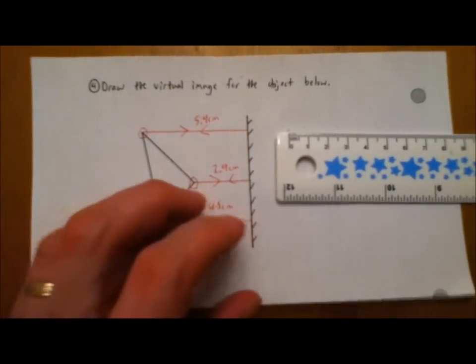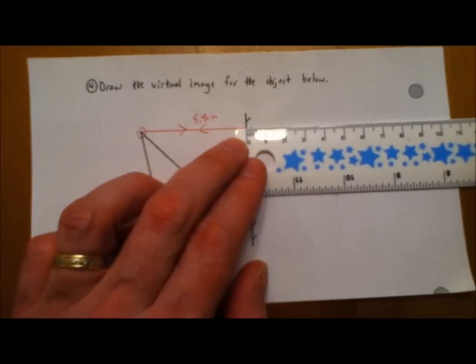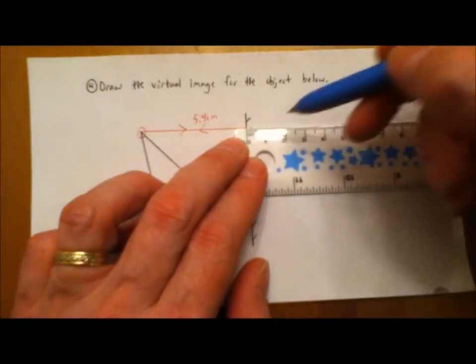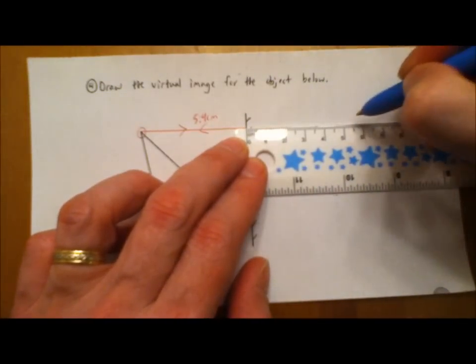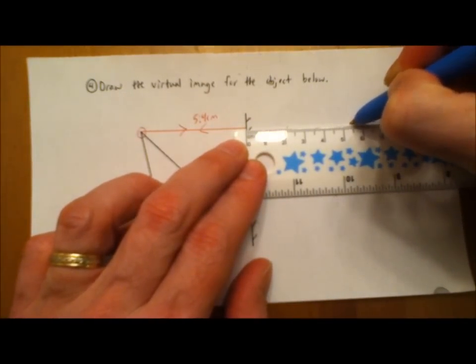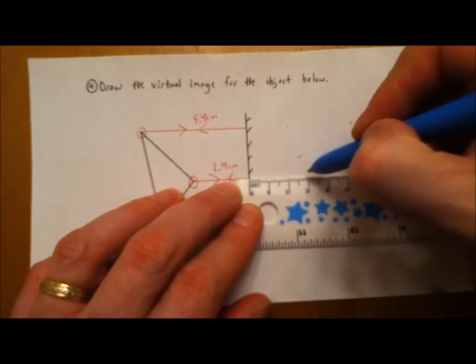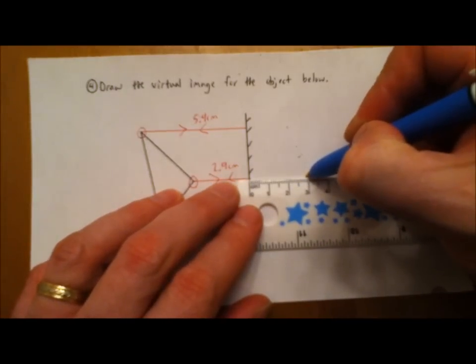Then what you're supposed to do is extend that line behind the same distance. So I want to measure on this side 5.4 centimeters, so we'll put a little dot there to represent where that is. On this side, we'll measure the same distance, 2.9 centimeters, put a little dot to represent where that is.